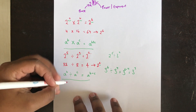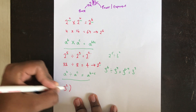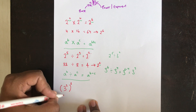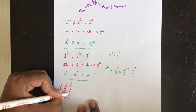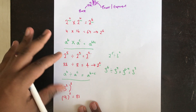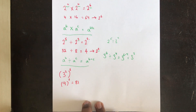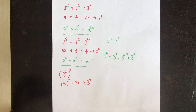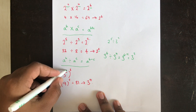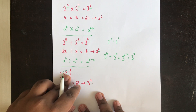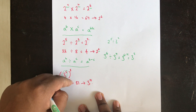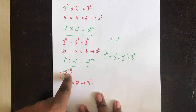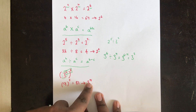Now suppose you have 3 power 2, the whole thing power 2. This is the same as 3 squared which is 9, then 9 power 2 which is 81. 81 is actually 3 power 4. We notice that when an exponent is raised to another power, you multiply the two exponents. So 3 squared, the whole thing squared, becomes 3 power 2 times 2, which is 3 power 4.